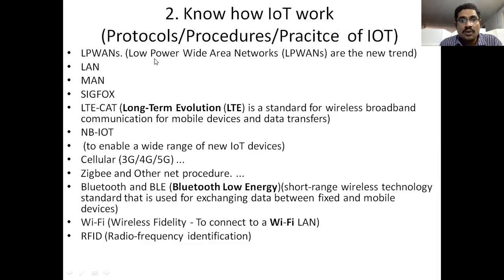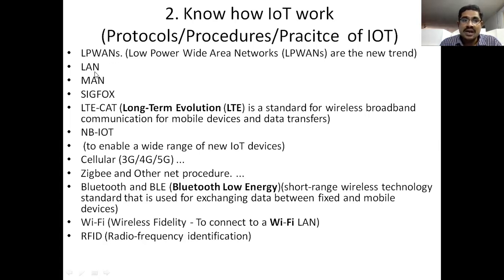LPWAN means Low Power Wide Area Networks — it is the new latest trend for transfer of data from one device to another device. We have three types of networks here: LAN — Local Area Networks, MAN — Metropolitan Area Networks, and WAN — Wide Area Networks.